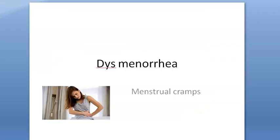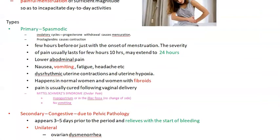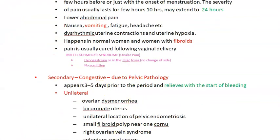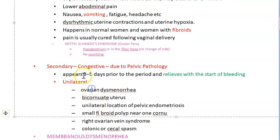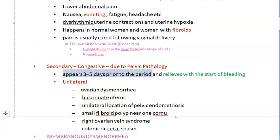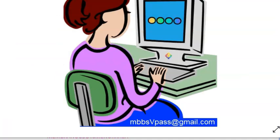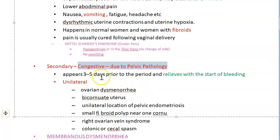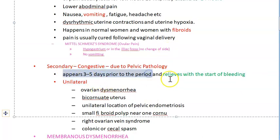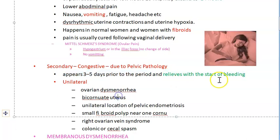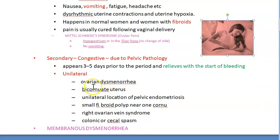Now moving to secondary or congestive dysmenorrhea. This is due to pelvic pathology. It appears three to five days prior to the period and — very importantly — it relieves with the start of bleeding. So once bleeding starts, the pain stops. This is a pathological condition, and the term 'congestive' is the standard word used, just as in congestive lung or congestive liver.